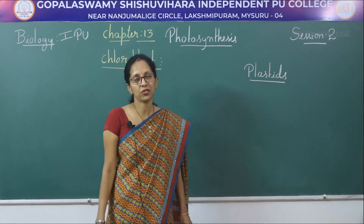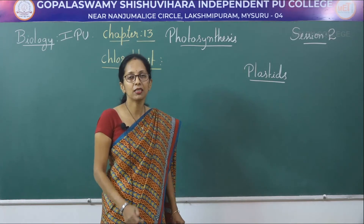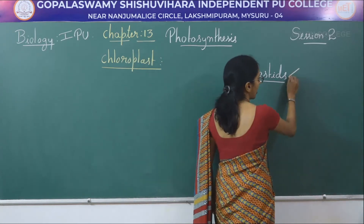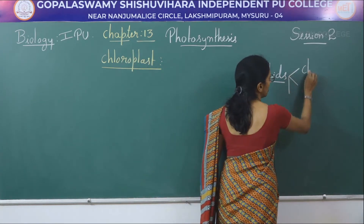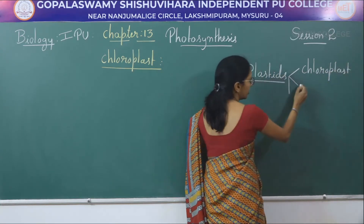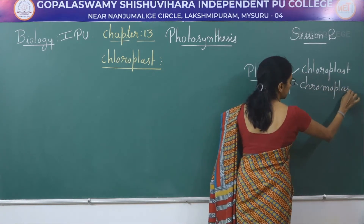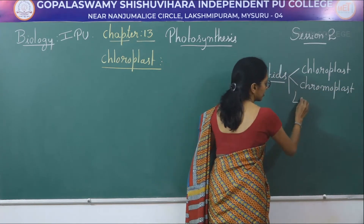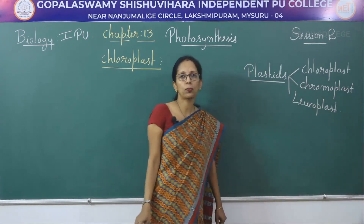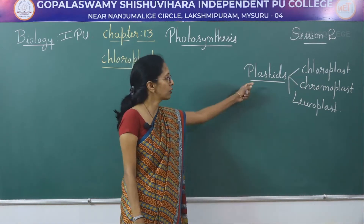What are plastids? These are the protoplasmic structures present in a plant cell. There are three types of plastid: chloroplast, chromoplast, and leukoplast.